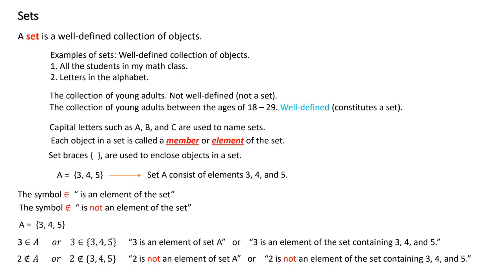We've already covered matrices in 1324, and you saw that we like to give names to our matrices — matrix A, matrix B. Sets are going to follow suit. When we're looking at particular sets, we're going to give it a name. The names are given in capital letters, usually just a letter of the alphabet — A, B, or C, as you saw in matrices. The elements inside a set are called elements or members of the set.